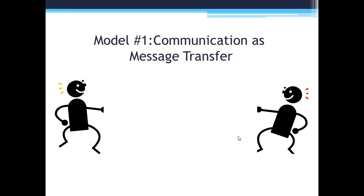The first model is communication as message transfer. In this model a sender develops and sends a message across a channel, which is then received by a receiver.